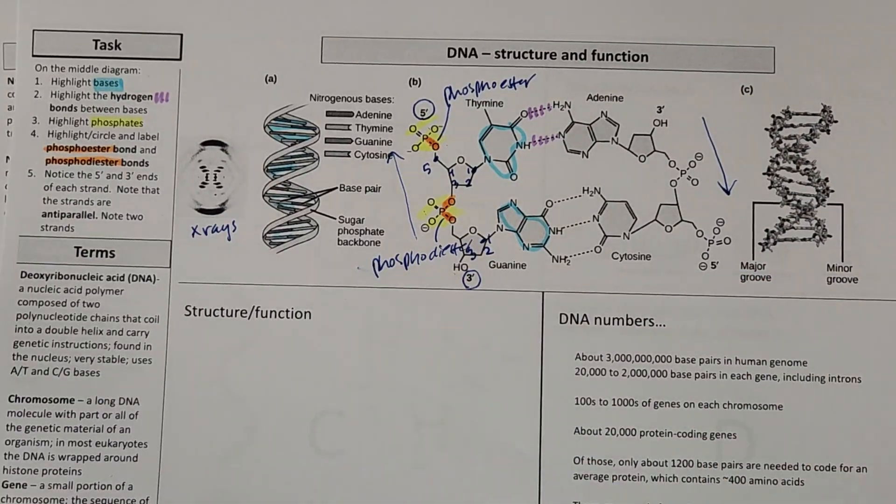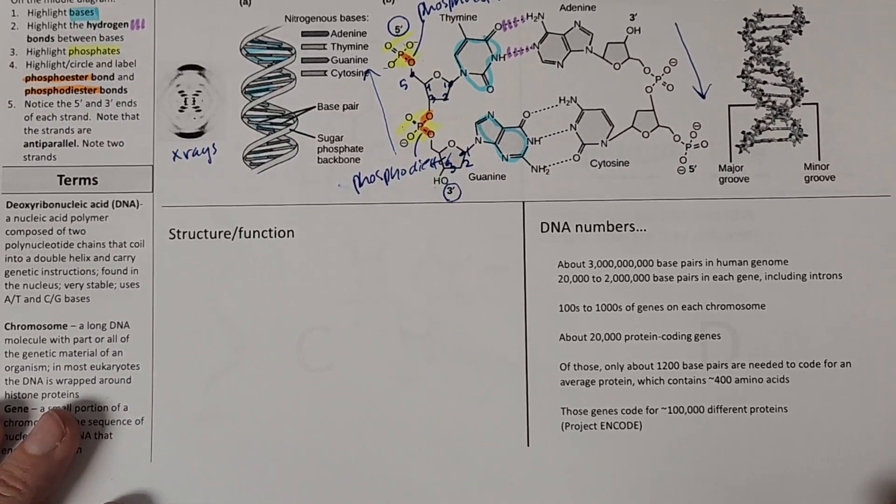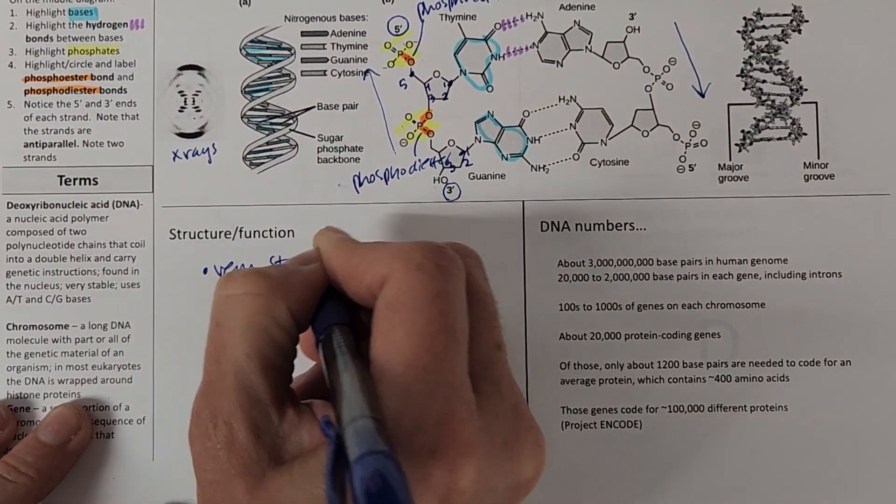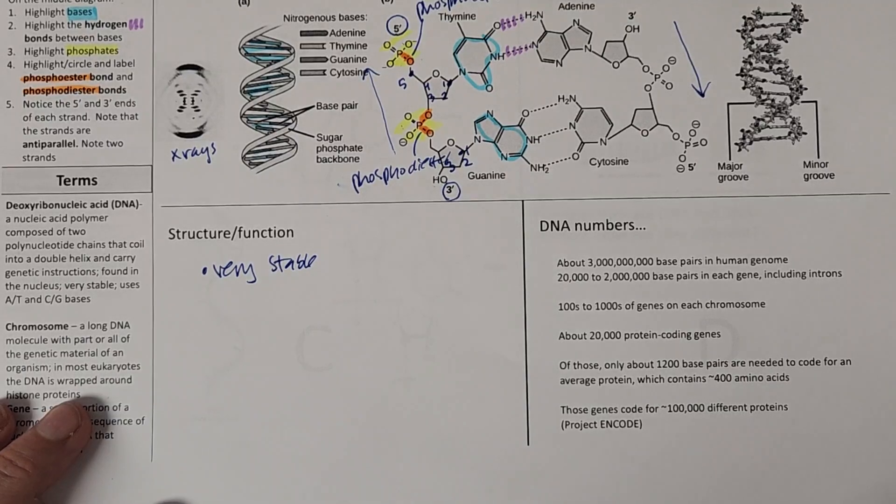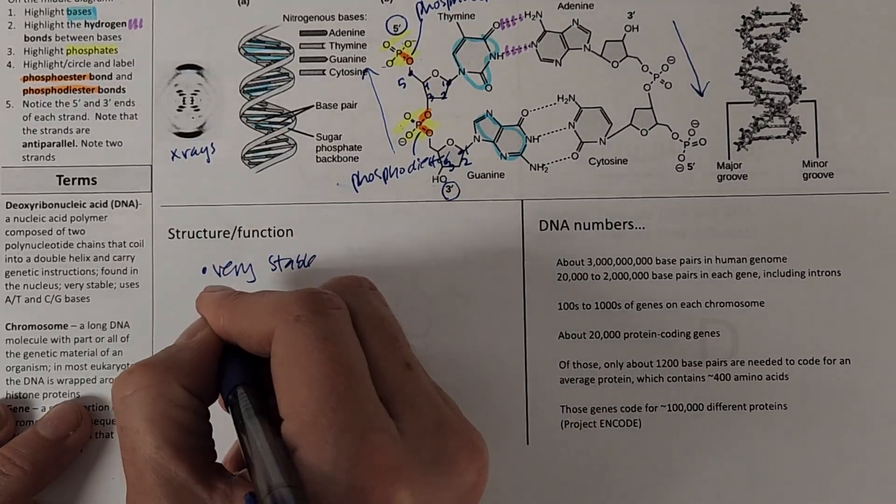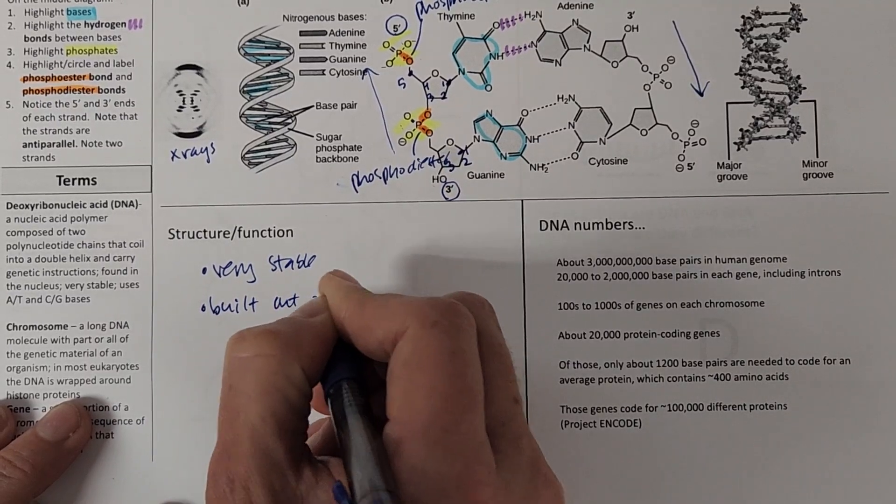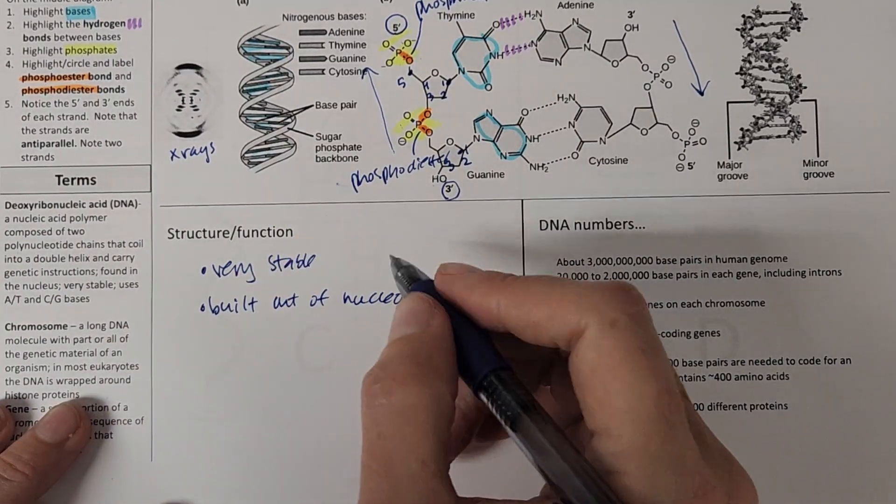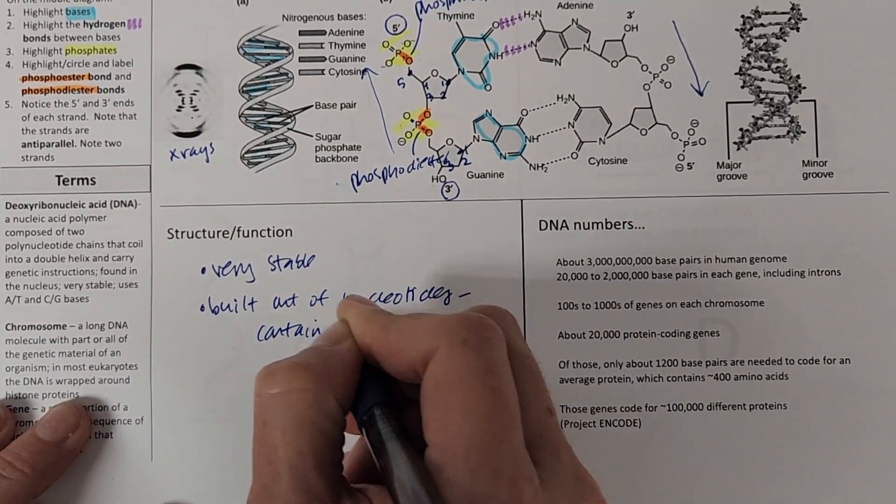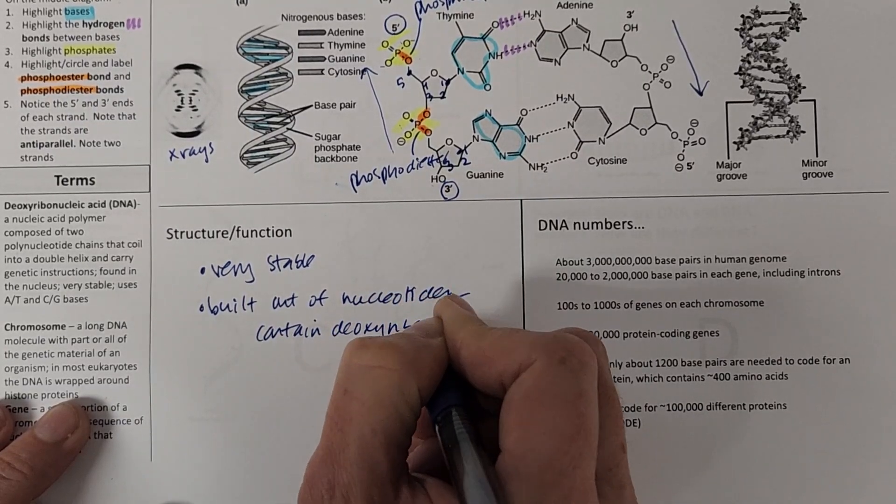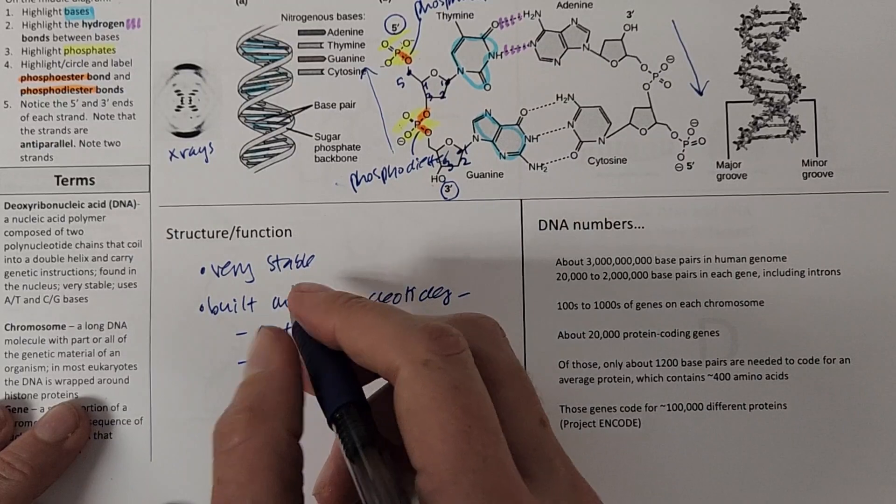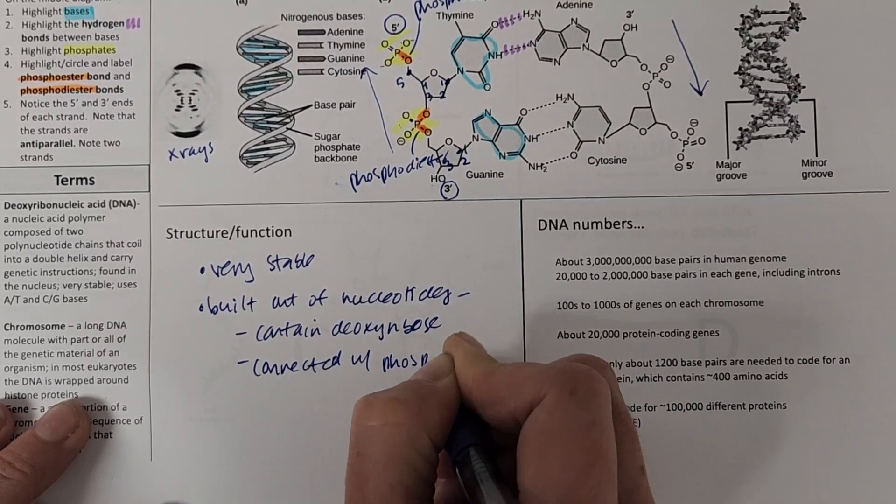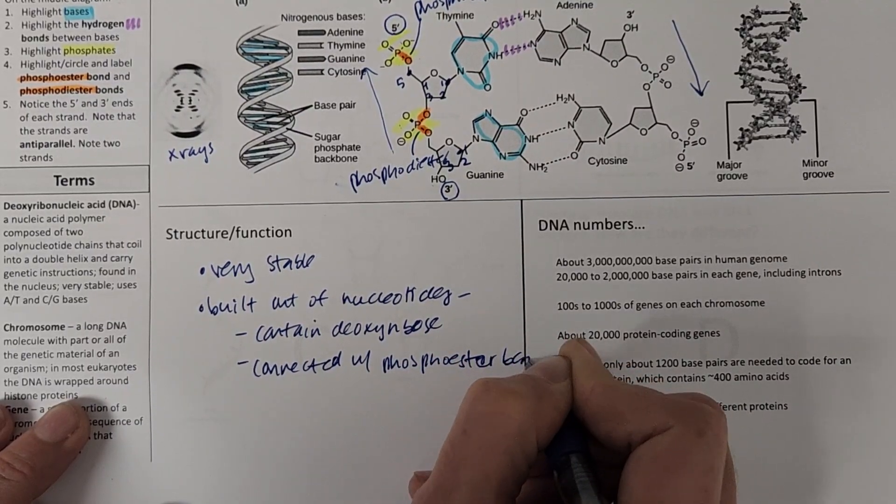A couple other features to think about. This double helix is very stable. So DNA is very stable. Makes sense. We don't want our genetic material to just kind of fall apart on us. Like we have been seen, these are built out of nucleotides. And those nucleotides contain deoxyribose.